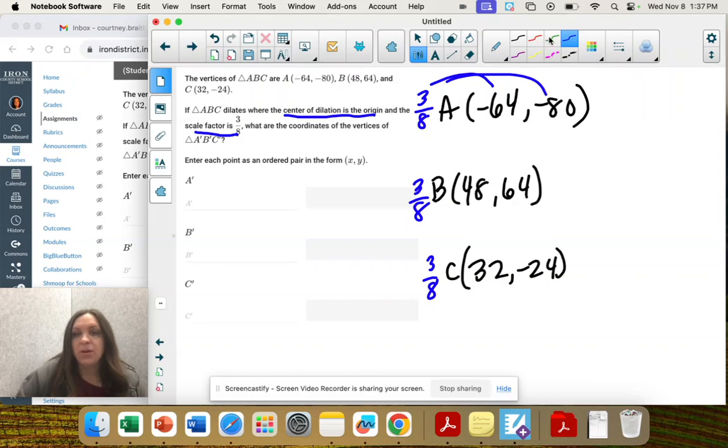So A prime is 3 8ths times negative 64. That's negative 24. 3 8ths times negative 80 is negative 30.